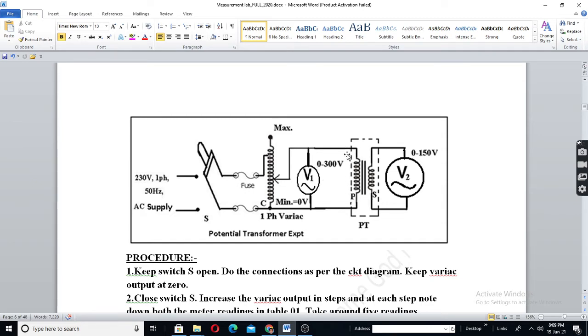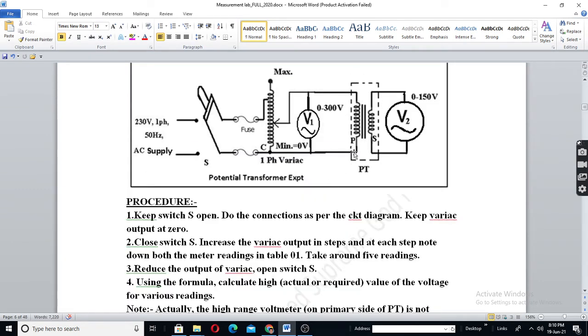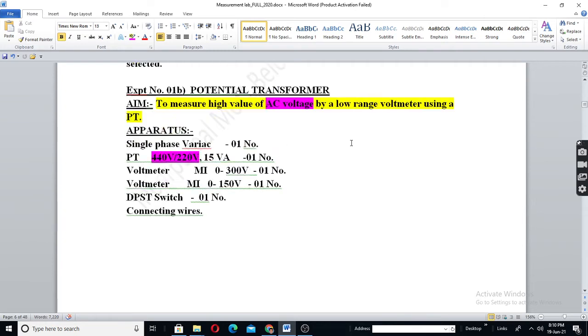But normally, this will be very high and this will be low. Say this will be 100 is to 1 or 1000 is to 1. But for laboratory purpose, for teaching students and for research purpose, we have just 2 is to 1. That is 400 is to 220 volts. See, here if it is 10 turns, this will be 5. This is 2 is to 1.